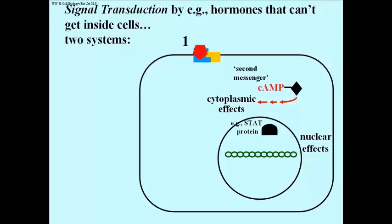As an example, if this were adrenaline and this were a liver cell, the result of the several phosphorylations is to activate the enzyme glycogen phosphorylase. That's the enzyme that's going to catalyze the degradation of glycogen.